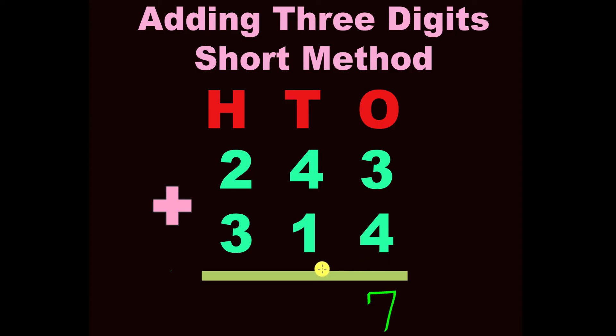Now we are going to travel to the tens place, and we are going to add the tens place vertical straight down. Four plus one equals what? You got it, five.